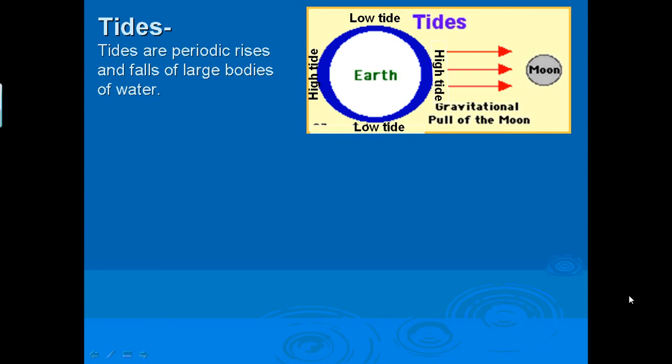Here we go with tides. Tides are periodic rises and falls of large bodies of water. If you look at the picture, you'll notice that tides have something to do with the earth, gravity, and the moon. When we have tides, we have two high tides and two low tides.